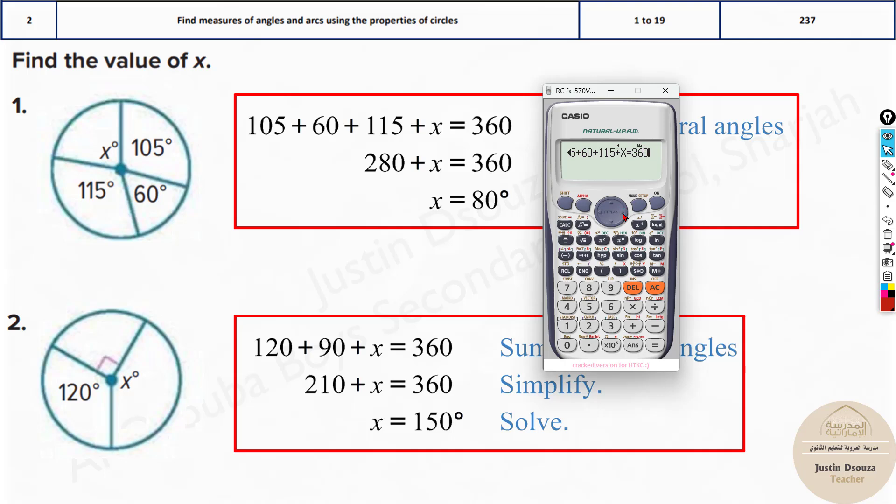105 plus 60 plus 115 plus x equals that is by alpha equal to, and x is by alpha, closing the bracket symbol. Now don't press equal to, you will not get answer because you have used equation and variable. Press shift and solve and it will solve for x, then press equal to. You will get the answer that's 80 degrees.